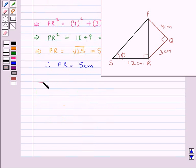Now, consider triangle PRS. In this, cot φ is equal to base upon perpendicular, that is SR upon PR. SR is of measure 12 cm and PR is of measure 5 cm.